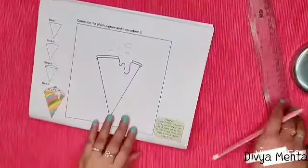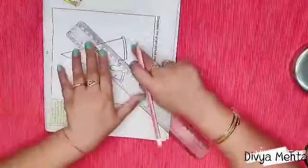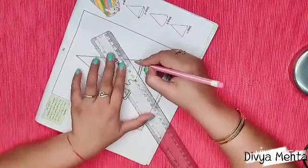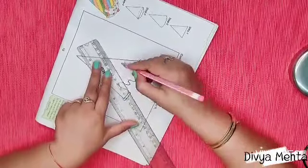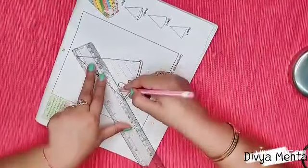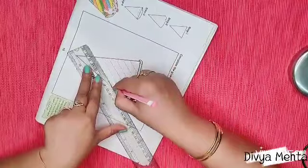And after that you will use scale to draw the stripes on the cone. As you can see that cone is very colorful. So we will draw the stripes like this.